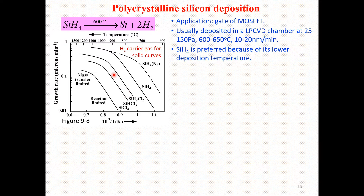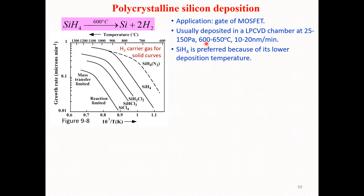Remember that polycrystalline silicon deposition has particular importance in the gates of MOSFETs. It is usually deposited in a low-pressure chemical vapor deposition chamber at 25 to 150 Pascals pressure, and the deposition temperature should be in the range of 600 to 650 degrees centigrade.